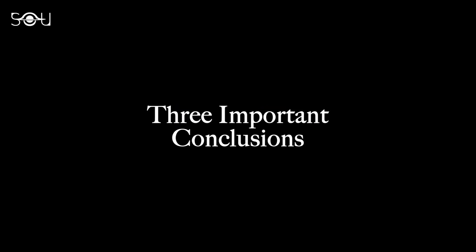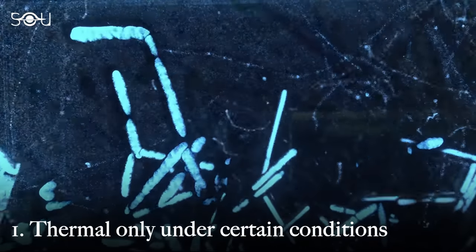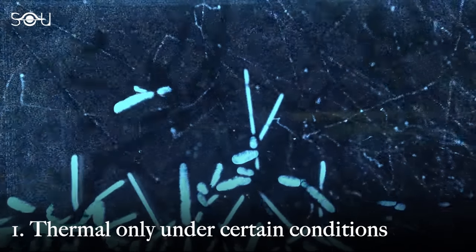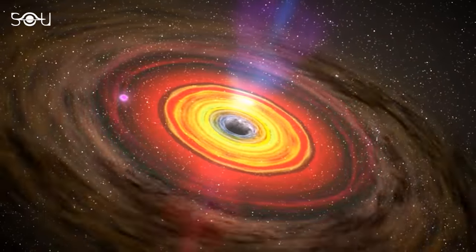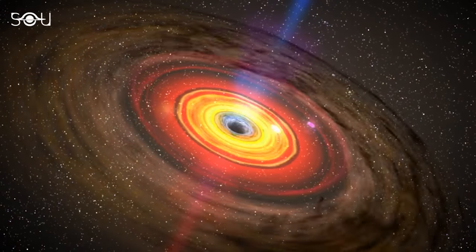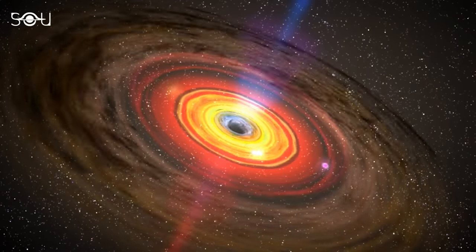There were three critical conclusions from this experiment. The first is that the radiation was thermal only under specific conditions of spatial variation of the hopping probability, which means that real Hawking radiation may also only be purely thermal in certain situations.